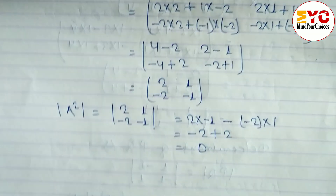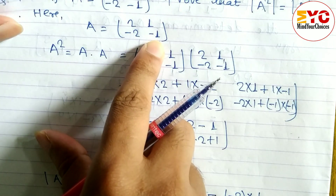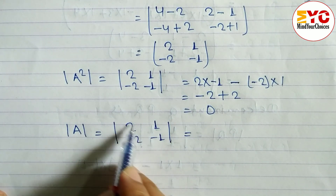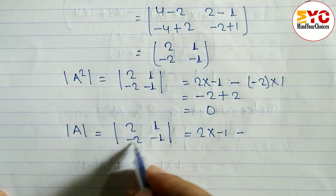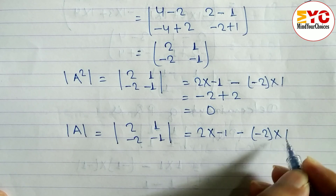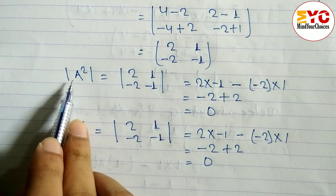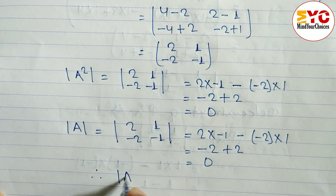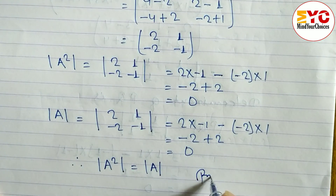Now for the RHS, we find the determinant of A. A is given as [[2, 1], [-2, -1]]. Multiply the leading diagonal: 2 into minus 1, minus the non-diagonal: minus 2 into 1. That gives minus 2 plus 2, which equals 0. So det(A) = 0. Since det(A²) = 0 and det(A) = 0, we have det(A²) = det(A). Hence proved.